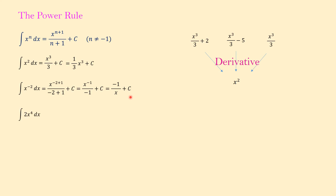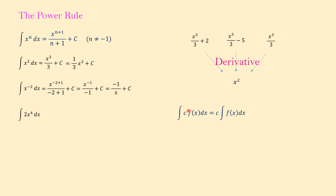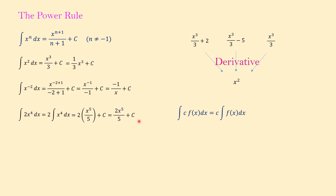Another example: the integral of 2x⁴ dx. The constant coefficient 2 has no effect on applying the power rule. In general, when we have a constant in front of a function, we can pull the constant out of the integral and just integrate the inside function. So this becomes 2 times the integral of x⁴ dx. Based on the power rule, the integral of x⁴ equals x to the 5 over 5 plus c. We can rewrite this as 2x⁵ over 5 plus c.